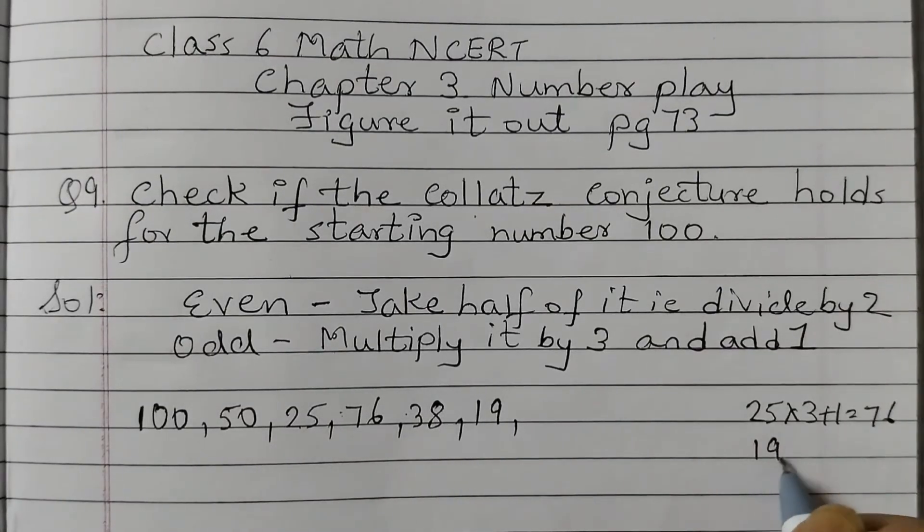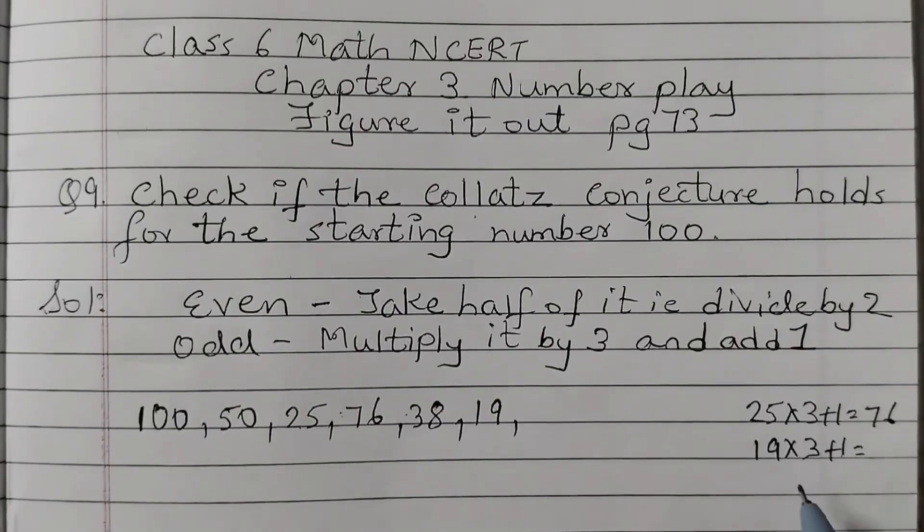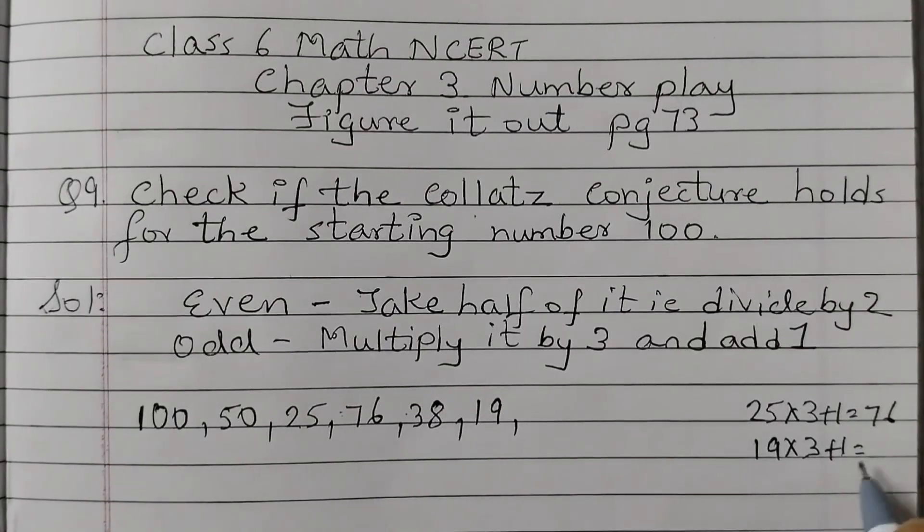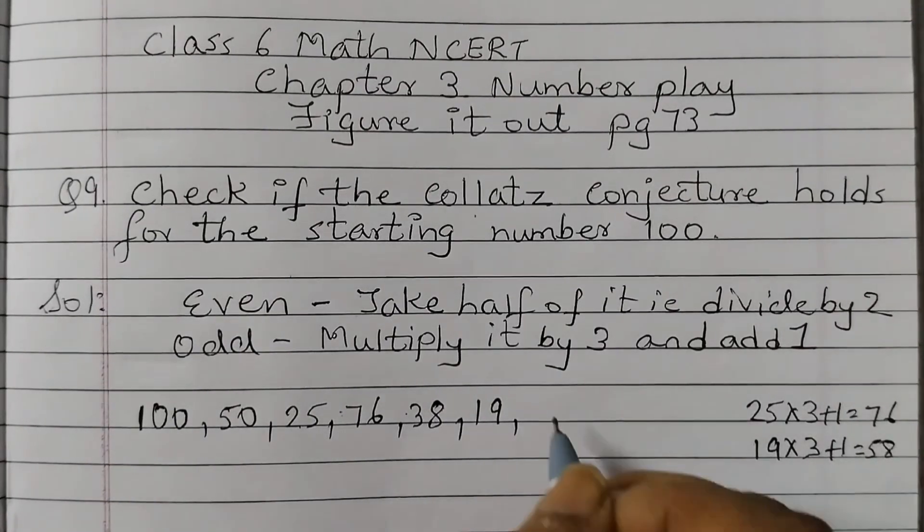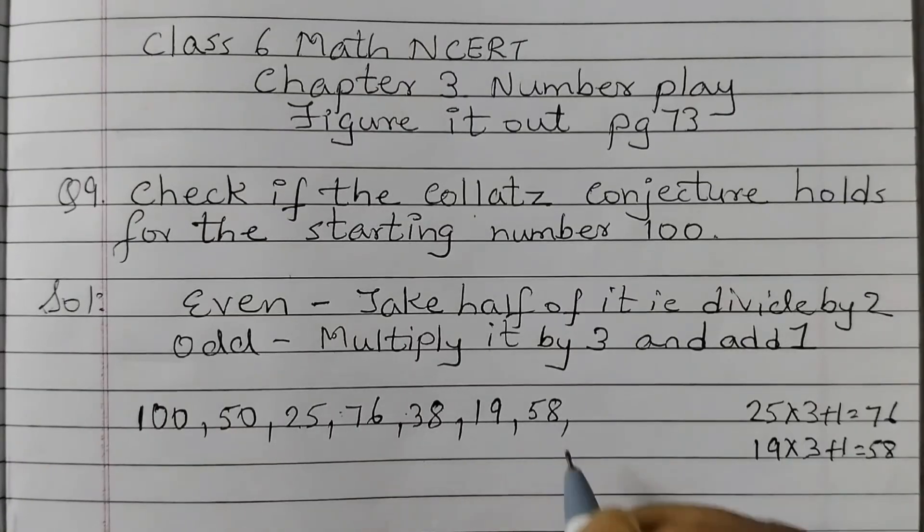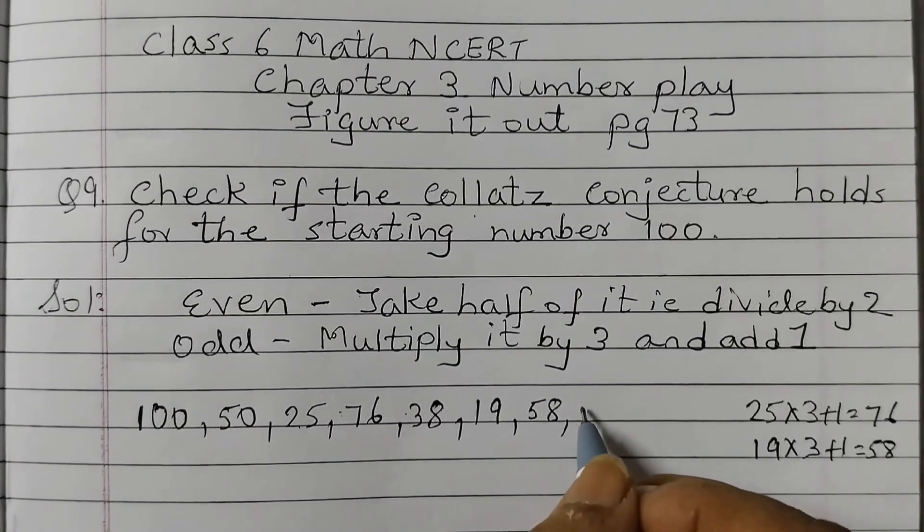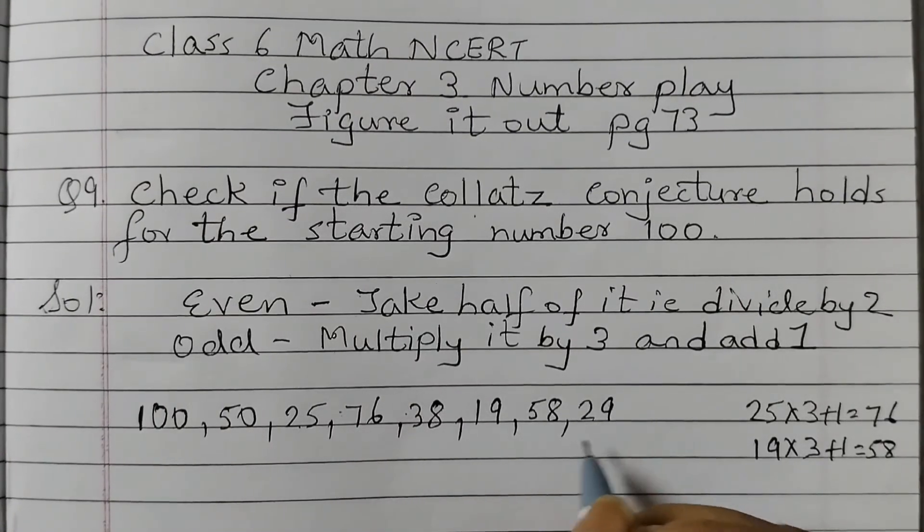19 is an odd number. So multiply by 3 and add 1. So you would get 19 times 3, 57, 58. 58 even number divide by 2, that is 29.